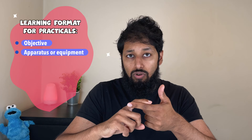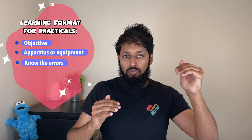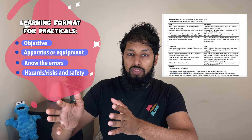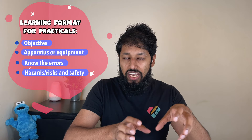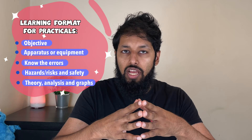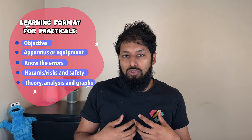Practicals are about 20% of your physics exam paper. You need to memorize them in a certain format. Number one: objective. Number two: all the apparatus or equipment. Number three: the errors and the mitigations — write them in a table form with error number one and its associated mitigation, error number two and mitigation number two. Similarly, do hazards or risks and safety in another column, so you can connect the recommended safety measure to a particular hazard. Learn any variations in the experiment and any relevant theory or graph required.